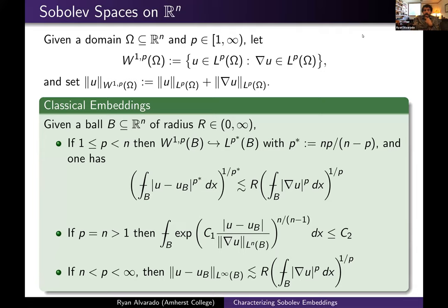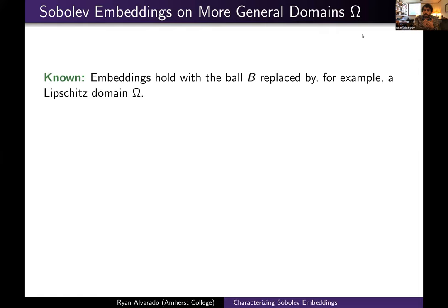I've stated this Sobolev embedding theorem for balls, but one can replace a ball with a domain provided the domain under consideration is sufficiently regular — for example, if it's a Lipschitz domain, or even more generally a John domain, like a Von Koch snowflake.